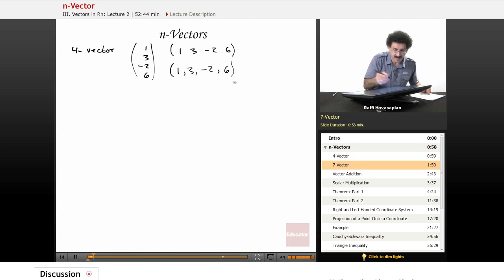Okay, a 7-vector. Let's do, again, so you'd have 0, 5, 0, 6, 9, 7, 2, something like that.